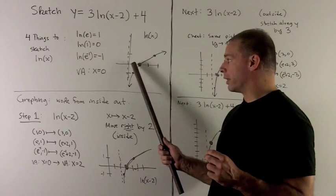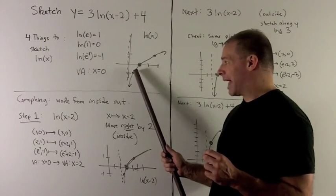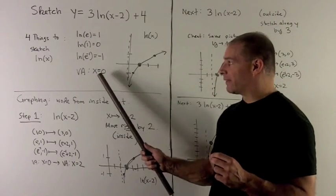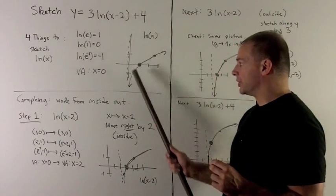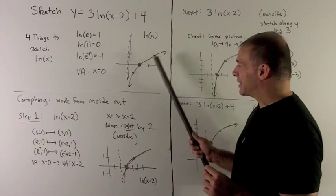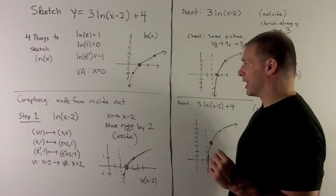So we go over 1 third, come down 1, blacken that dot in. And then we have a vertical asymptote at x equals 0. So when I connect the dots, my graph looks like that.